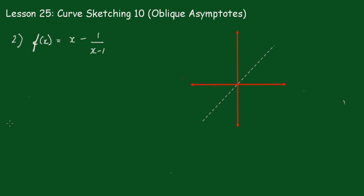This is the second example of an oblique asymptote. We can see that x cannot equal 1, so we have a vertical asymptote at x = 1. By the same reasoning as before, the fractional part can never be zero, so f(x) cannot equal x — giving us the oblique asymptote. It's clearly not going to be an even or odd function.